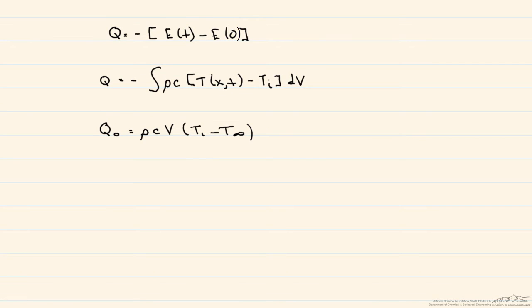So now let's write the whole thing out. So Q divided by Q zero is equal to the integral of minus T of XT minus Ti divided by now Ti minus T infinity dV over the volume.